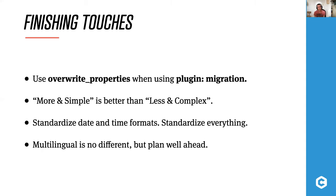Most of our complex data migrations will depend on the migration lookup plugin — basically a lookup that allows us to reference data that has already been migrated. The most useful function of that is the override_properties part. Override properties allows us to tell the migration script to only override specific fields, so if we're attaching paragraphs to an already existing node, we make sure the only thing we're changing is that specific paragraph field — not corrupting the entire node.